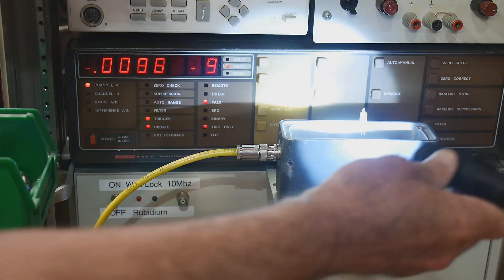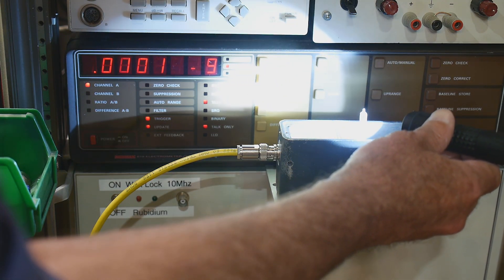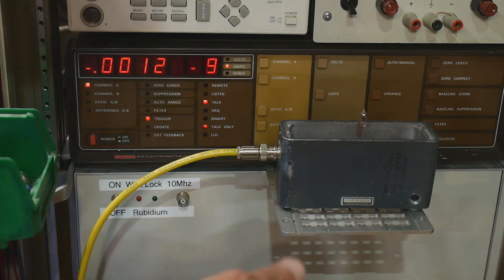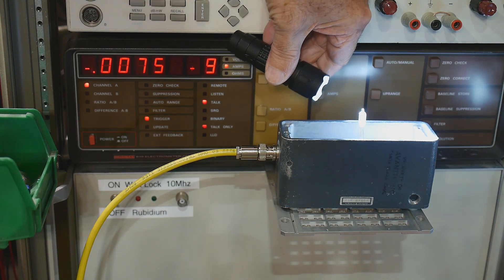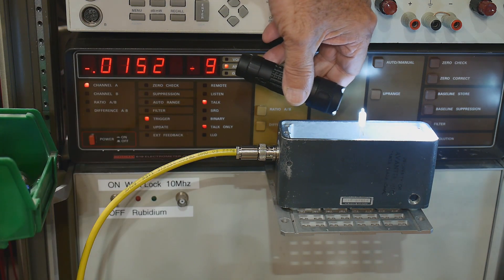But if I shine it from this direction, I'm kind of putting more light on the right hand one. And if I shine it from this direction, I'm kind of putting more light on the left hand one, and we get negative current.